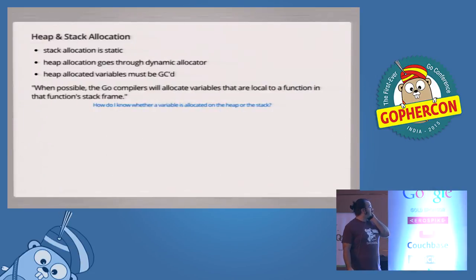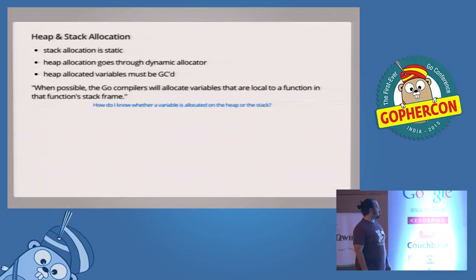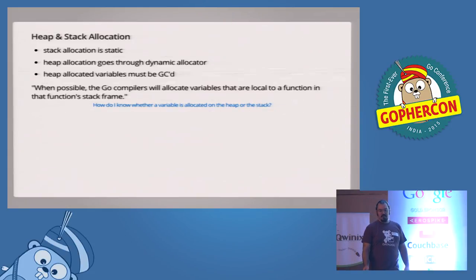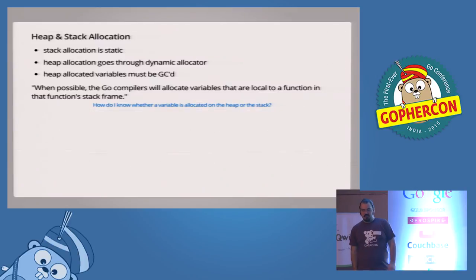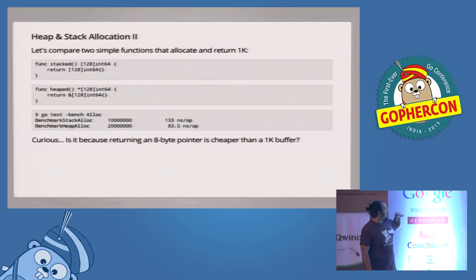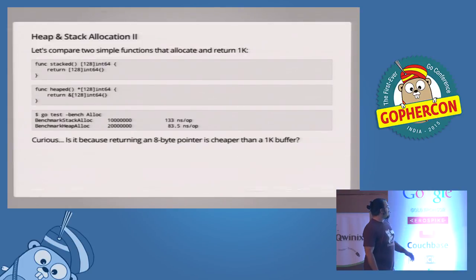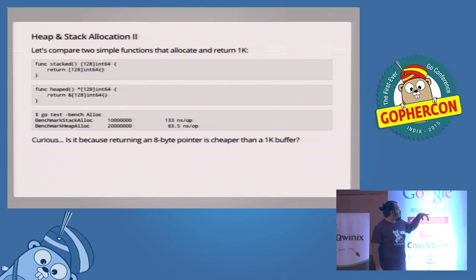Lastly, we're going to look at heap versus stack allocation. This gets really hard to understand because the compiler can trick us. When you allocate something on the stack it's good — the compiler makes space for it beforehand. When you allocate something on the heap it goes through a dynamic allocator and puts pressure on the garbage collector. On the stack, when you return from the function the stack frame gets popped and everyone's happy. We're trying to allocate 1K on the stack versus 1K on the heap — returning a pointer from one (which we think gets heap-allocated) versus returning the stack-allocated array.